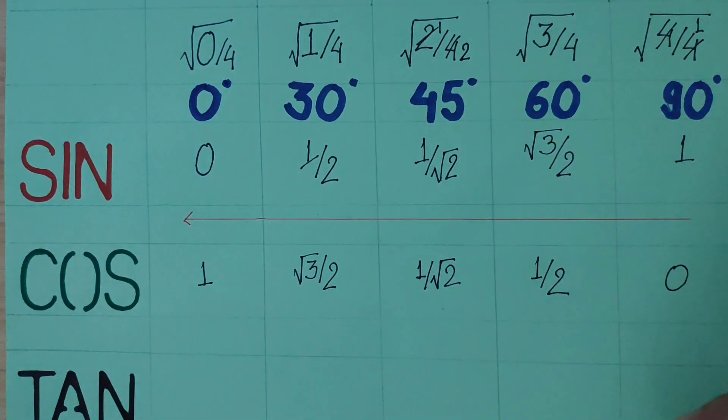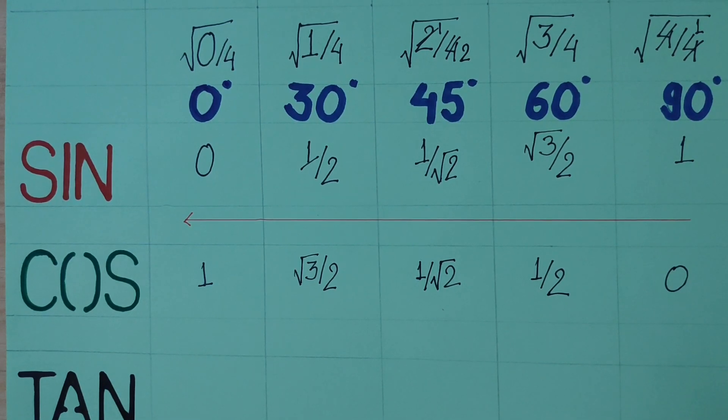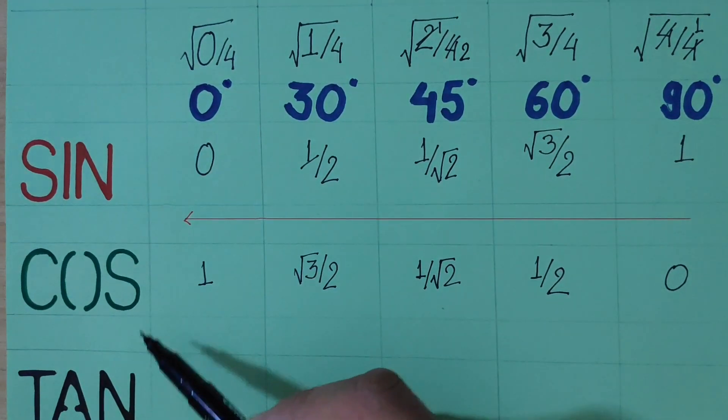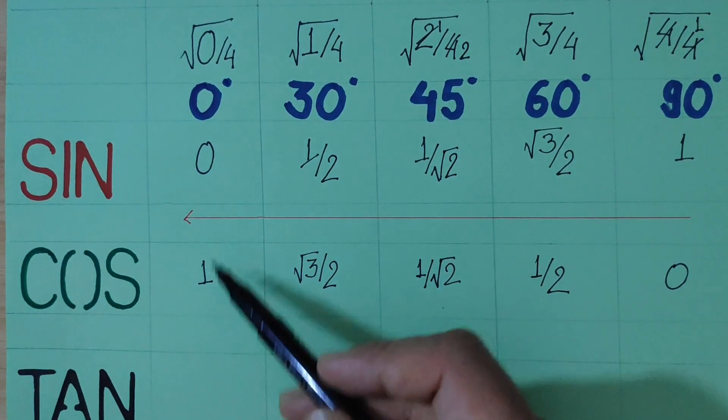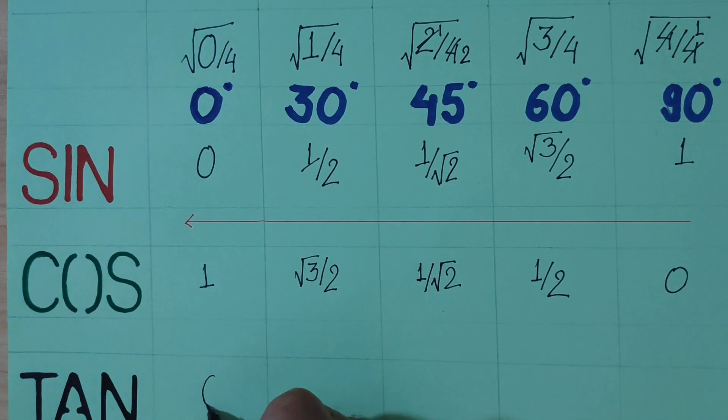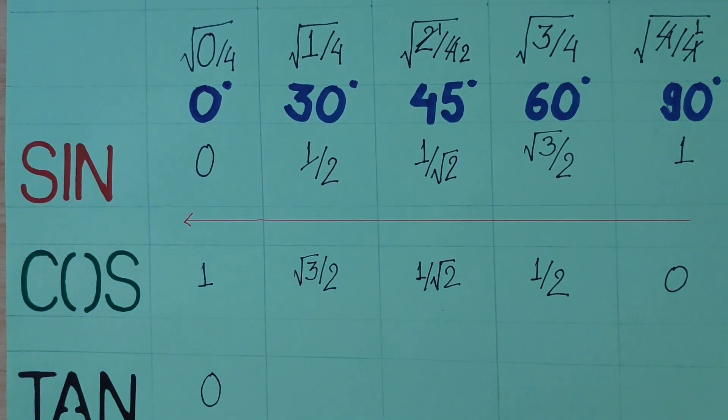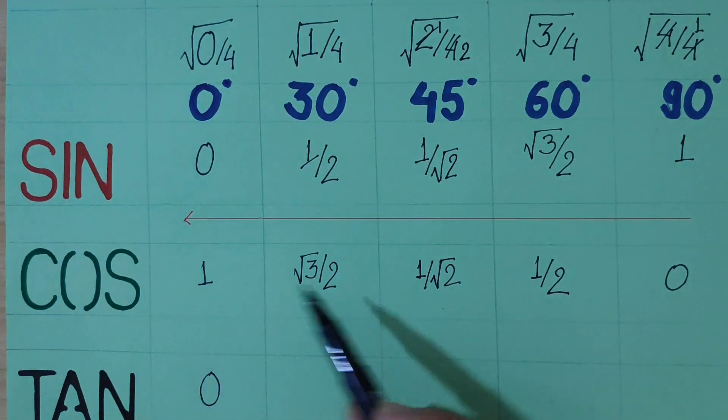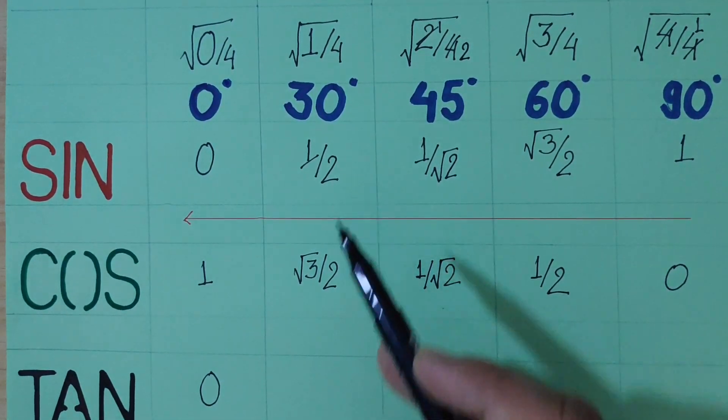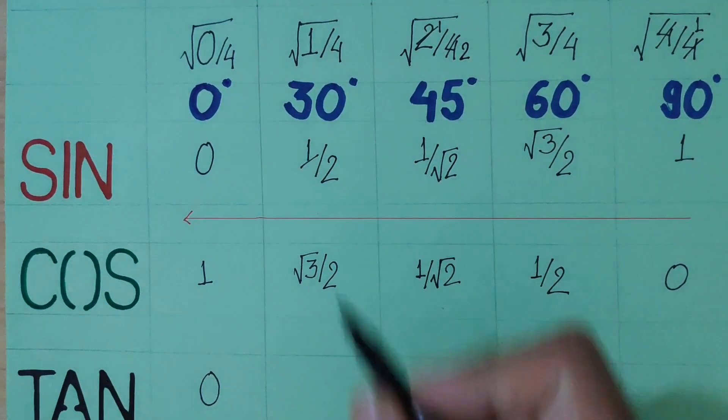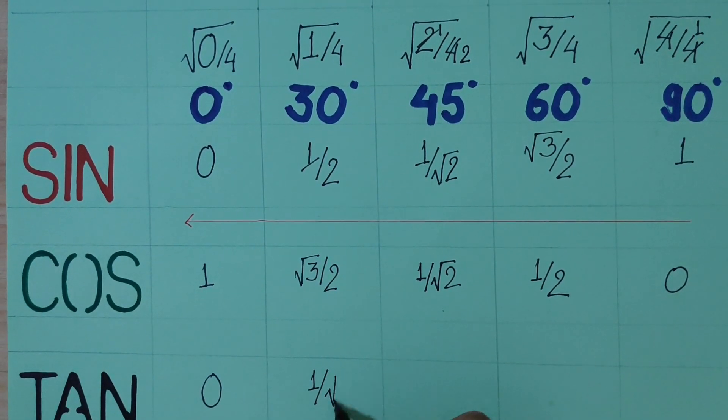For tangent, tan 0 is sin 0 over cos 0, which is 0 over 1, so tan 0 is 0. Tan 30 is sin 30 over cos 30, which is 1 by 2 divided by root 3 by 2, so tan 30 is 1 by root 3.